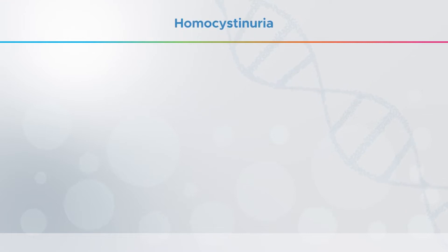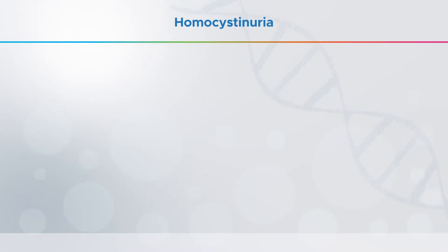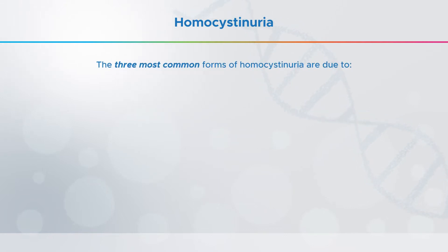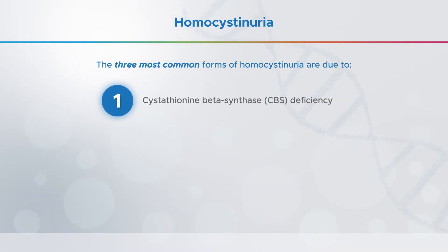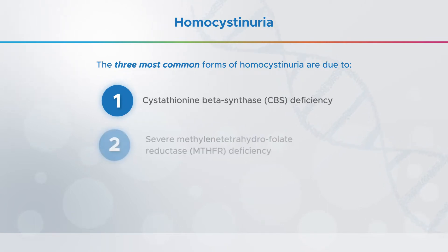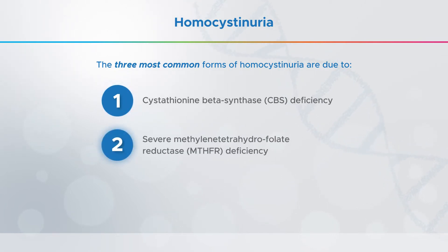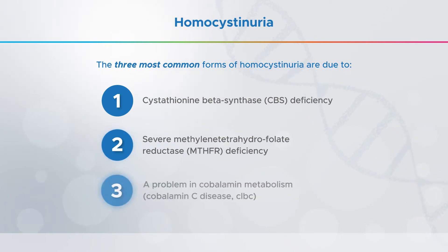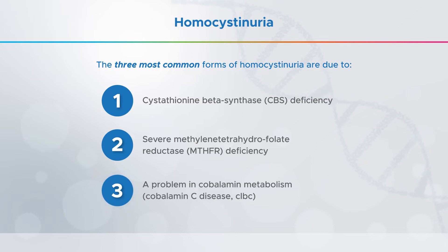In this video, we'll talk first about homocystinuria in general terms, and then go into more detail on the three most common forms: those caused by cystathionine beta-synthase deficiency, severe methylene-tetrahydrofolate reductase deficiency, and a problem in cobalamin metabolism known as cobalamin C disease.